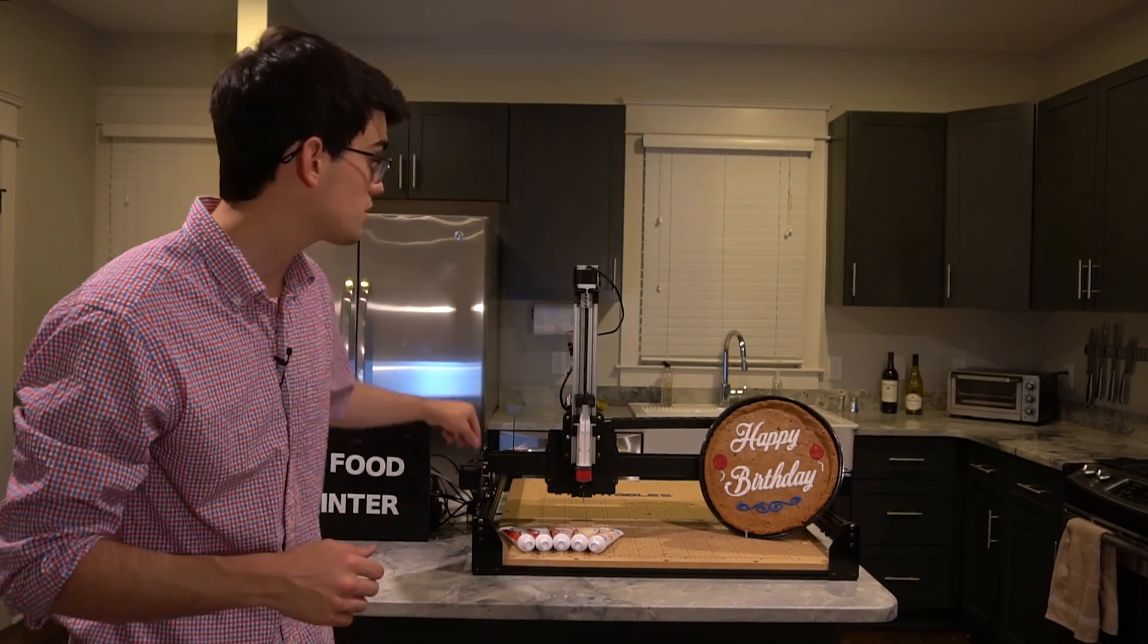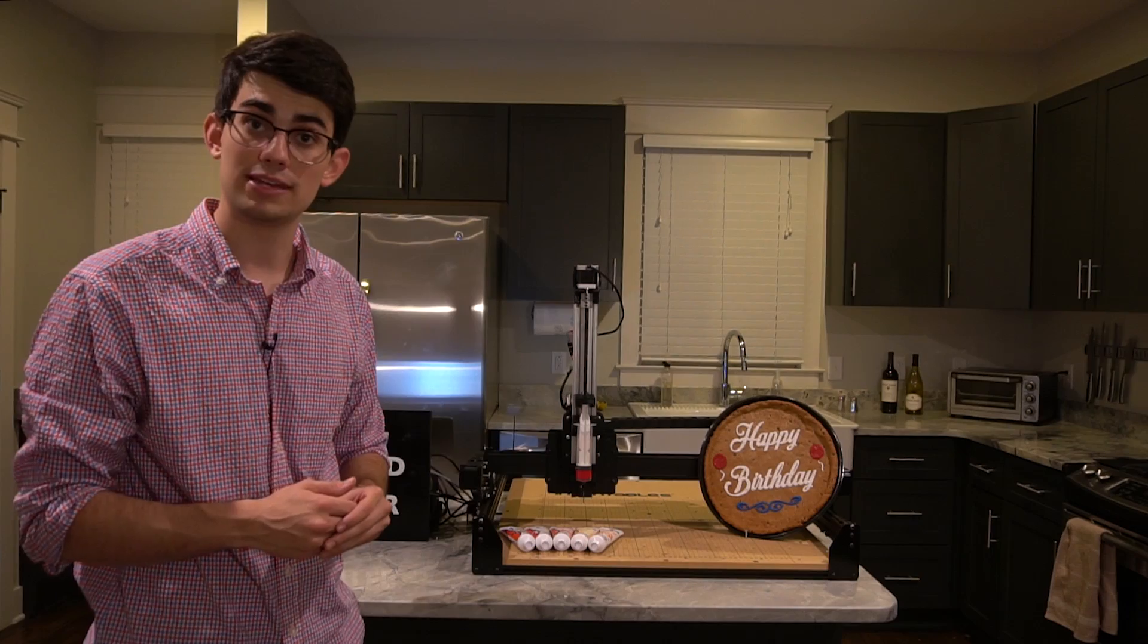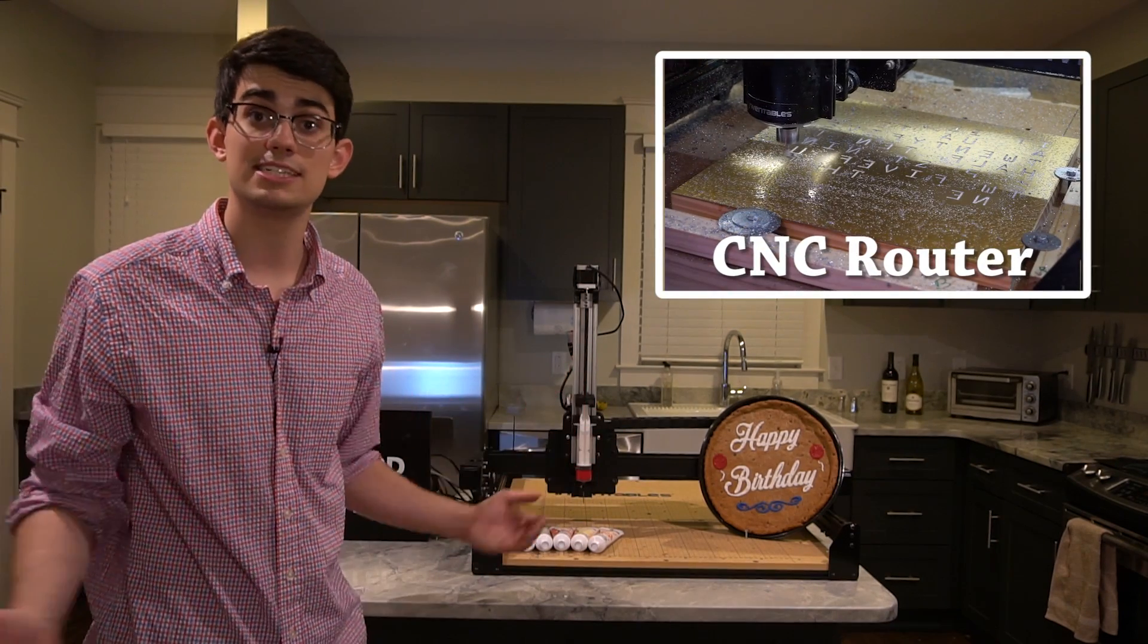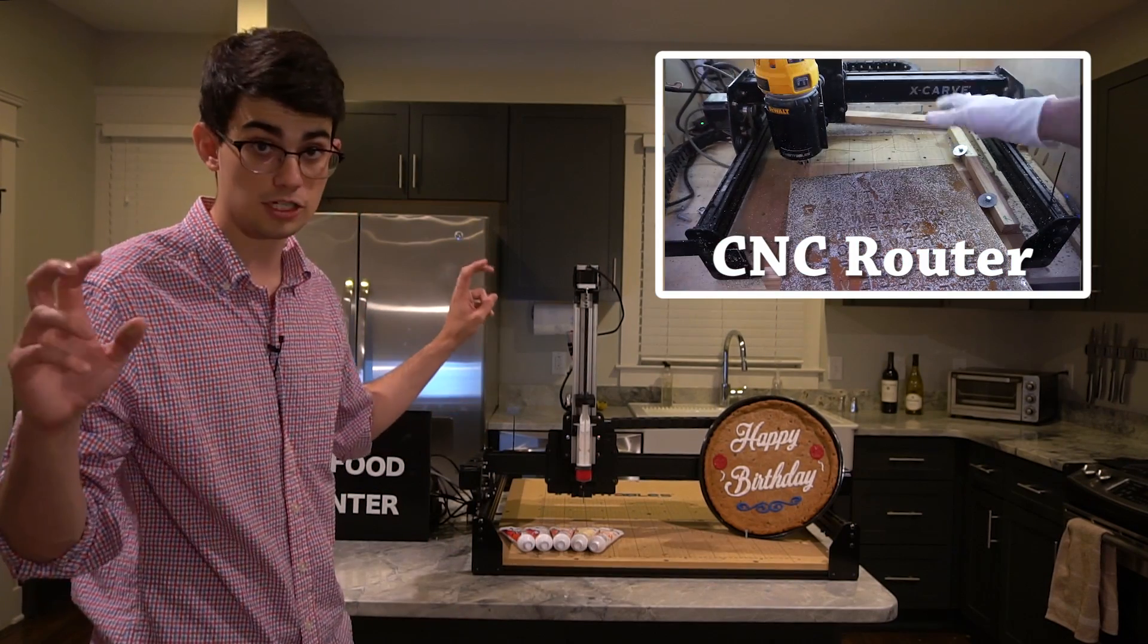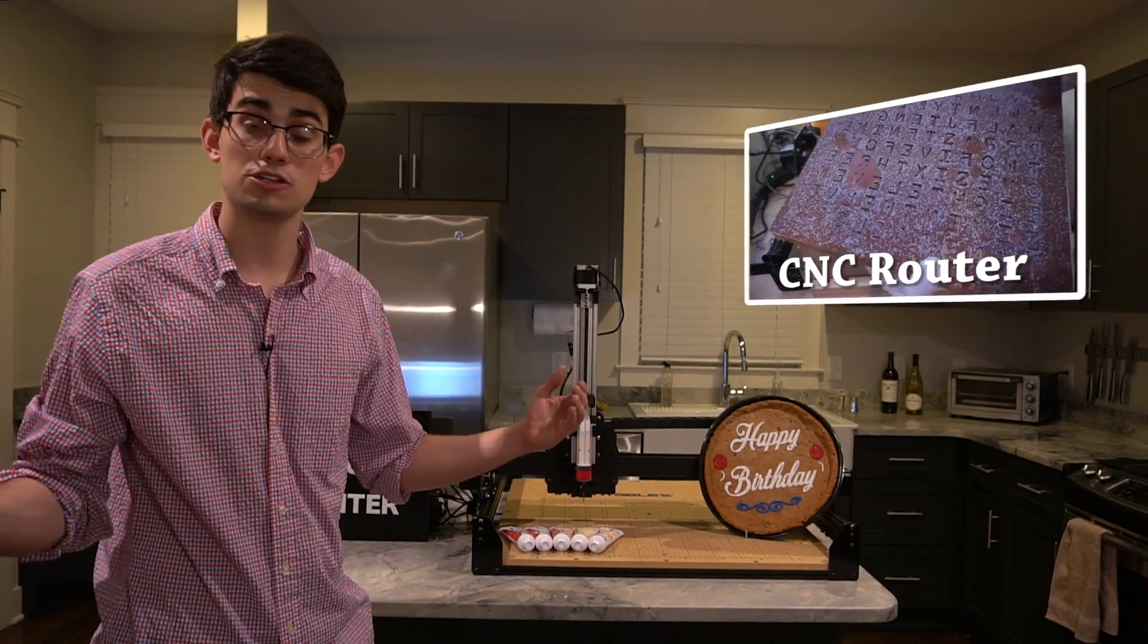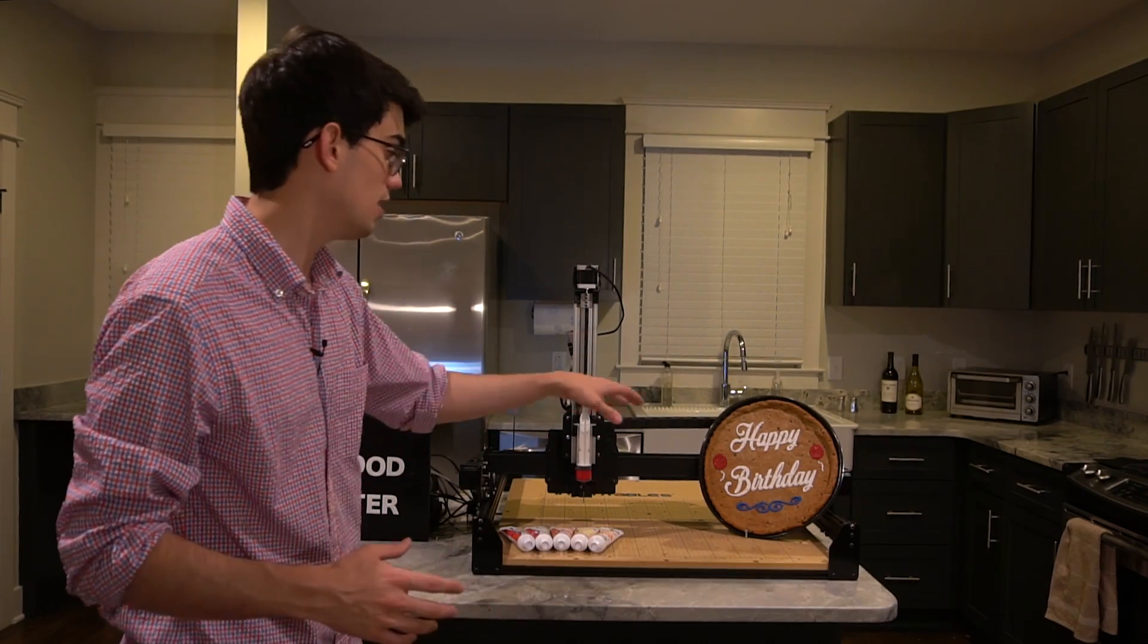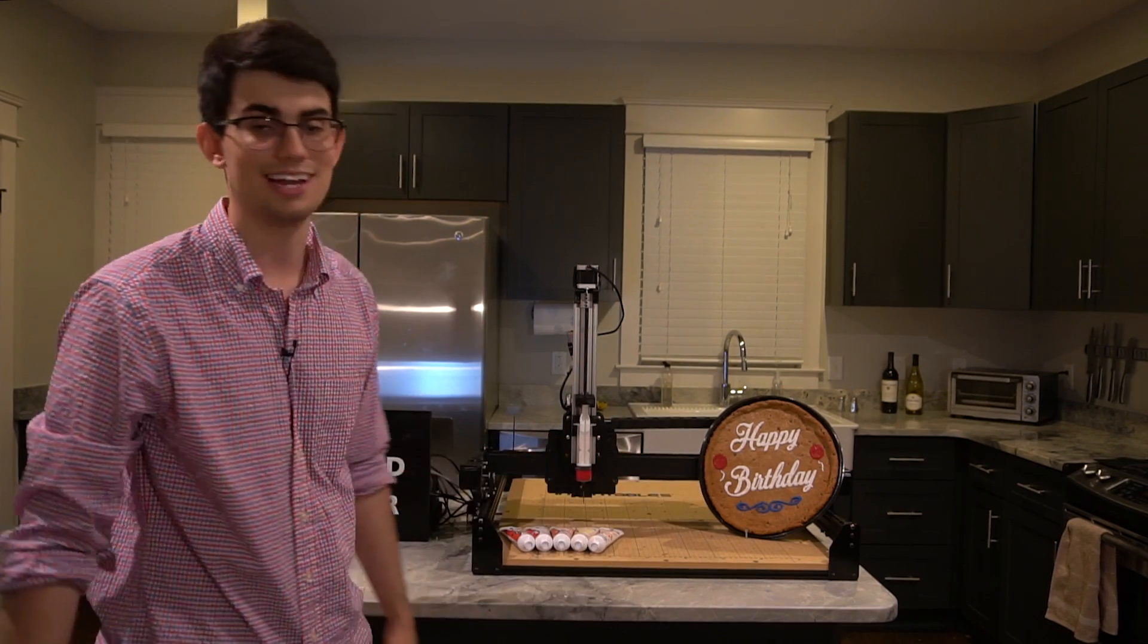The first thing we need to do is construct the frame, which will allow for our X, Y, and Z movement. If this frame looks familiar, that's because it's the same frame that my CNC router uses. We're using a CNC router frame, the X-Carve, over a 3D printer frame, because this frame allows for a lot larger work area, which allows us to print on stuff like a cookie cake, maybe even two cookie cakes.